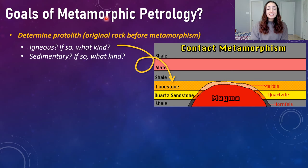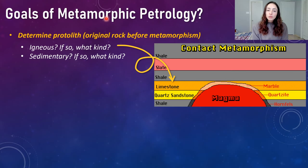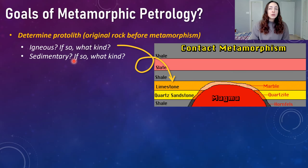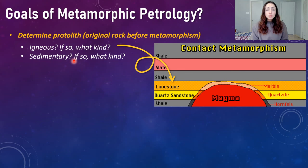Now that we've covered metamorphism and its types, what is the goal of metamorphic petrology? There are three major goals. The first is to determine the protolith — the original rock before metamorphism — and whether it was igneous or sedimentary. Further, what kind of igneous or sedimentary rock was it, and can that tell us about the environment it underwent metamorphism in and the type of metamorphism it experienced?